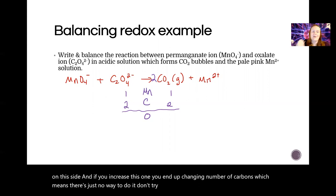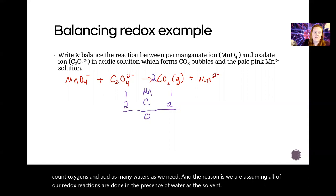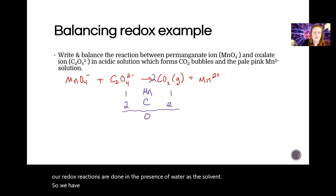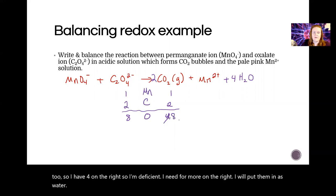Instead, we are literally just going to count oxygens and add as many waters as we need, and the reason is we are assuming all of our redox reactions are done in the presence of water as the solvent. Okay, so we have four oxygens here and four oxygens here, so I have eight on the left. I have two times two, so I have four on the right. So I'm deficient. I need four more on the right. I will put them in as water. Now I have eight of them.